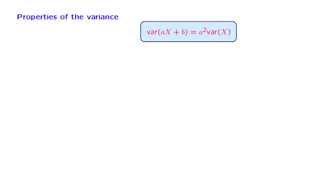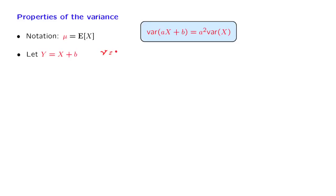Let us now take a quick look at some of the properties of the variance. We know that expectations have a linearity property. Is this the case for variance as well? Not quite. Instead, we have a specific relation for the variance of a linear function of a random variable. We will proceed one step at a time, first considering what happens to the variance if we add a constant to a random variable.